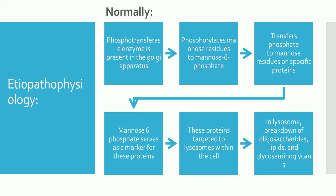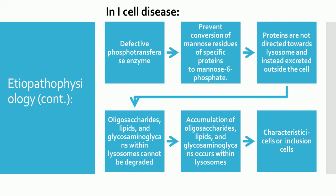In the lysosome, these proteins function as catabolic enzymes for the normal breakdown of substances — for example, oligosaccharides, lipids, and glycosaminoglycans — in various tissues throughout the body. In I-cell disease, there is a defective phosphotransferase enzyme.